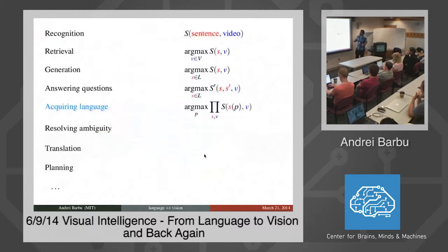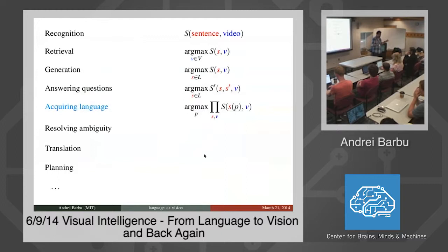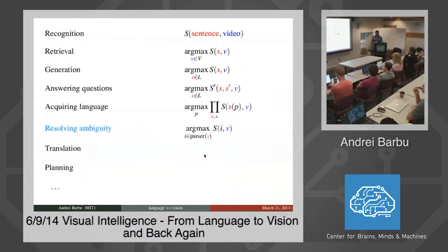With just one widget — the scoring function — we can perform retrieval, generation involving a difficult search task, and question answering. You can also perform language acquisition: this is just a big factorial hidden Markov model, and in the same way you can run EM on an HMM to tune its parameters, you can tune the parameters of this model. Given many sentence-video pairs, you find the best parameters of the words that explain the videos.